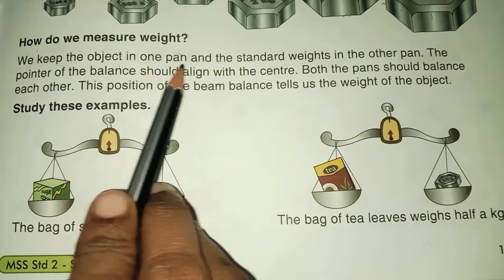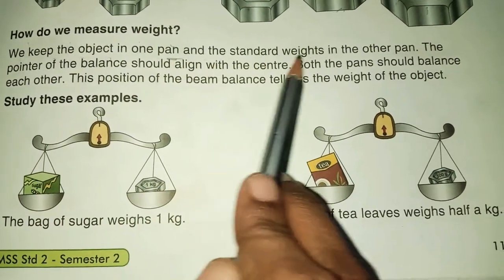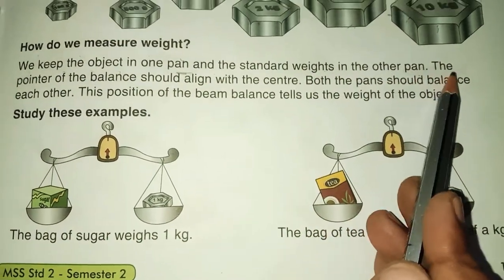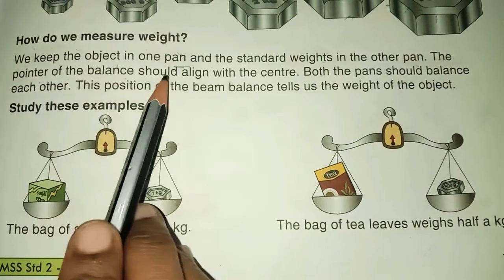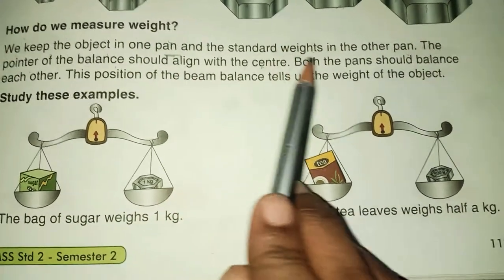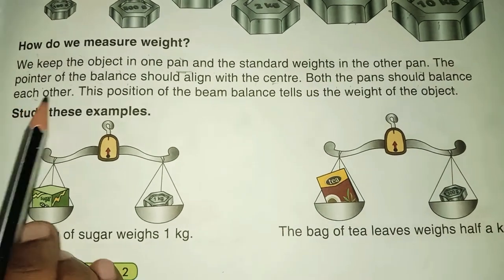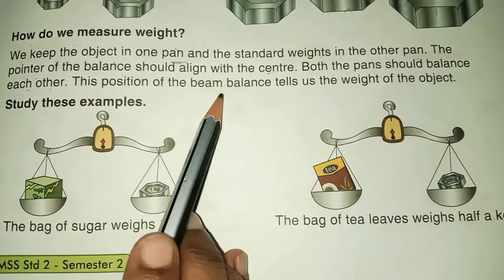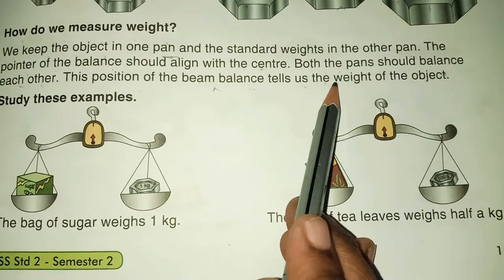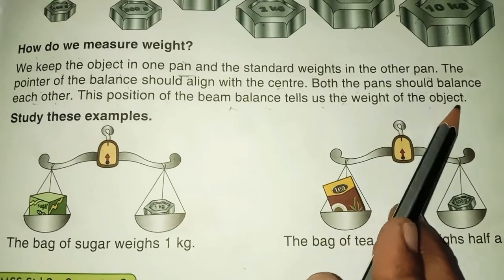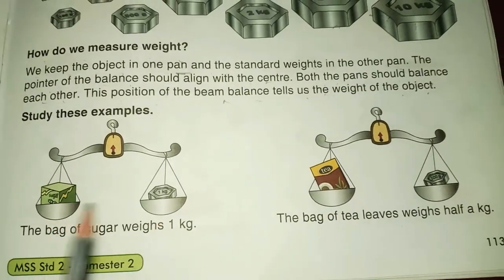We keep the object in one pan and the standard weight in the other pan. The pointer of the balance should align with the center. Both the pans should balance each other. This position of the beam balance tells us the weight of the object.